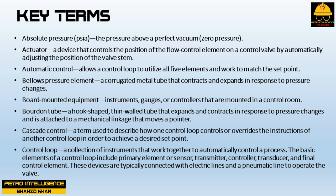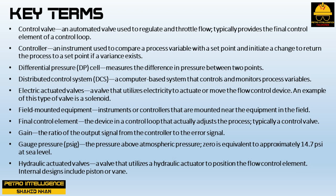These devices are typically connected with electric lines and a pneumatic line to operate the valve. A control valve is an automated valve used to regulate and throttle flow, typically providing the final control element of a control loop. A controller is an instrument used to compare a process variable with a set point and initiate a change to return the process to the set point if a variance exists. A differential pressure (DP) cell measures the difference in pressure between two points.